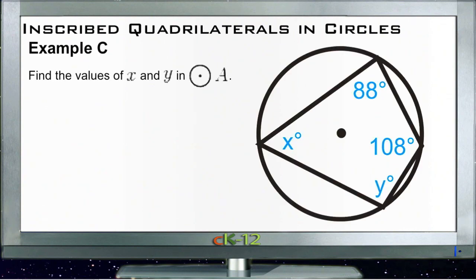And then example C. Example C says find the values of x and y in circle A. Well, this one's pretty quick. Again, we have an inscribed quadrilateral. 1, 2, 3, 4 points. So x is opposite 108.